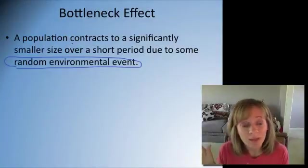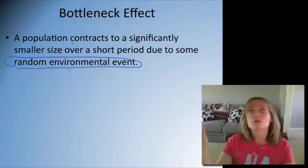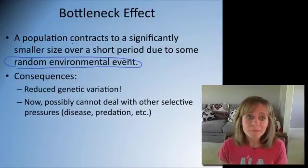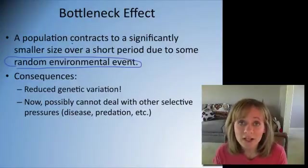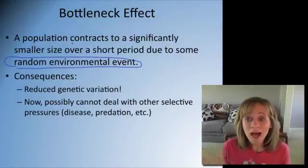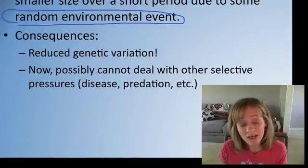So a tornado came and totally wiped out 75% of a deer population or whatever. That would be an example of a bottleneck effect. So some consequences of that, reduction in genetic variation. What if the 75% that gets taken out had all the variation and then you're left with 25% of the population that all look alike, that all have the same traits?